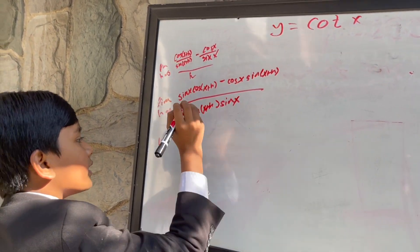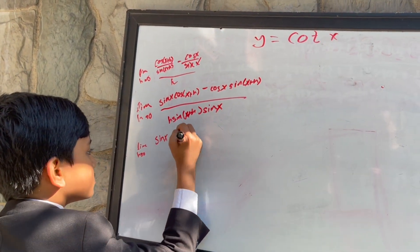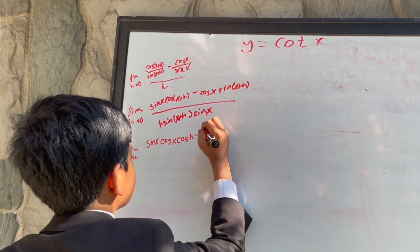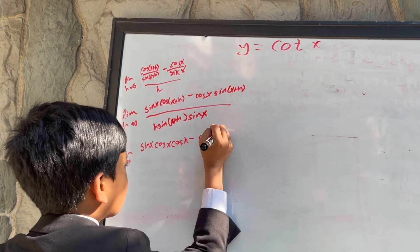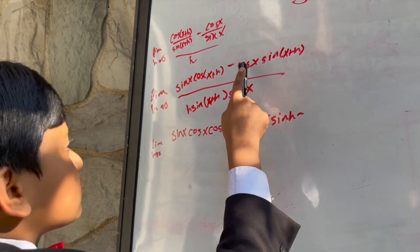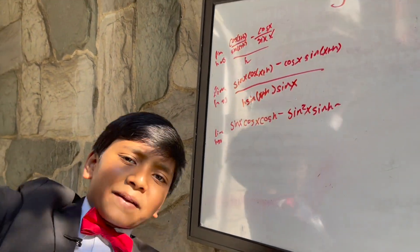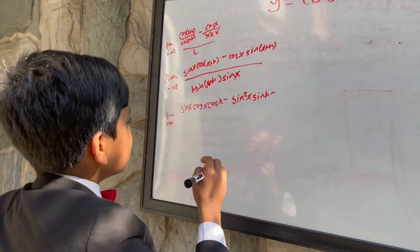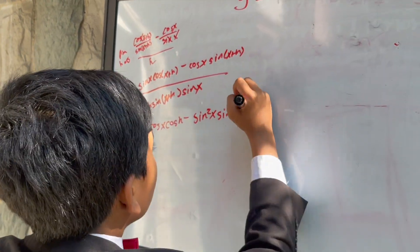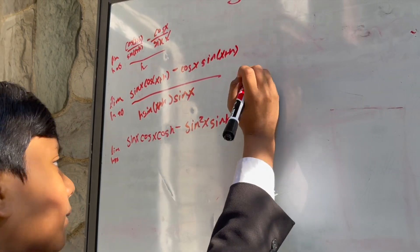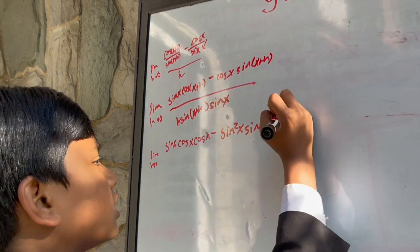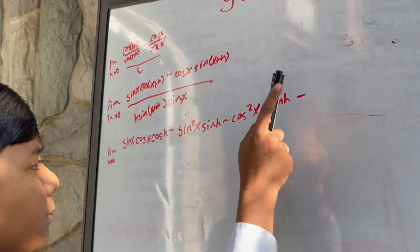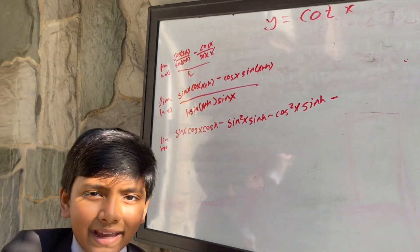Cosine of (x+h) expands to cosine x cosine h minus sine x sine h. So that gives sine squared x times sine of h. And then cosine x times sine of (x+h), which is cosine x sine h plus sine x cosine h — so that gives cosine squared x times sine of h.